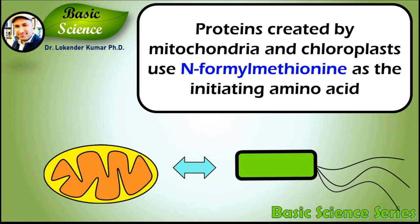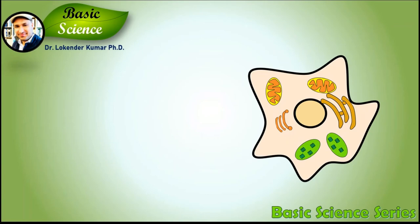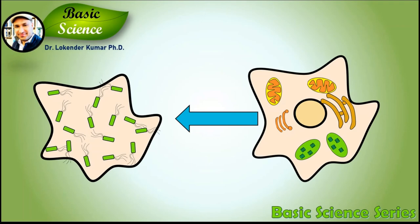These were the key evidences proposed in favor of the theory of symbiogenesis. All these evidences support that eukaryotic cells were created by the fusion of bacterial cells, and they live inside the eukaryotic cell in a symbiotic relationship. I hope now you understand the theory of symbiogenesis. Please subscribe to the Basic Science channel for new videos. Thank you and Namaste.